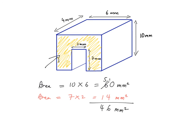Now that I have the cross-sectional area, all I need to do is multiply that by the width of this shape. So 46 times 4 millimeters. 40 times 4 is 160, 6 times 4 is 24, and 160 plus 24 is 184. Don't forget — when talking about volume, the units are always cubic. So the volume of this compound 3D shape is 184 millimeters cubed.